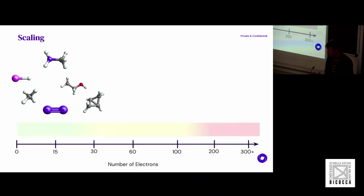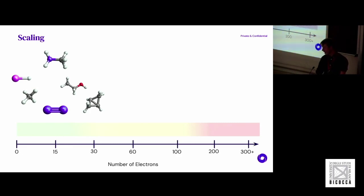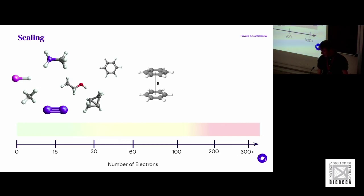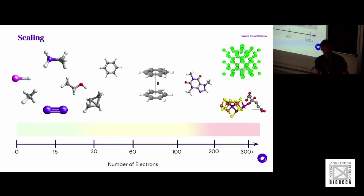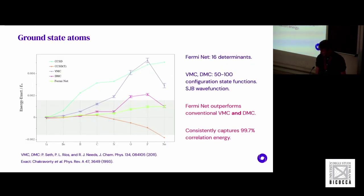In practice, what can you actually do? Exact solutions are possible for maybe 10 electrons, but with this method you can get exquisite accuracy on systems of maybe 30 to 50 electrons. You can stretch it a little further, but for bigger systems like caffeine with 100 electrons, you'll have to do something else.